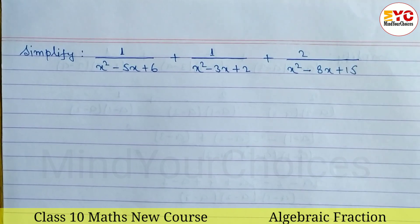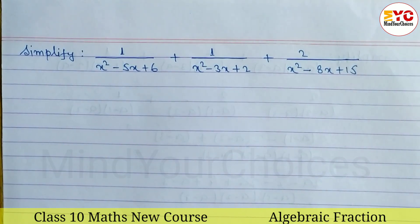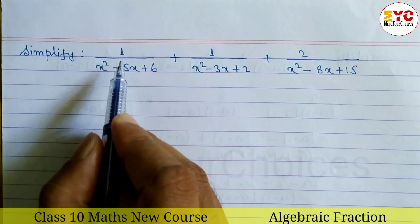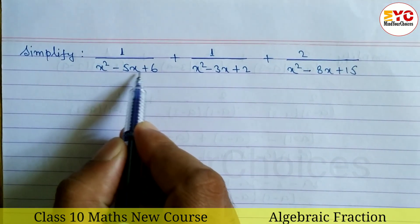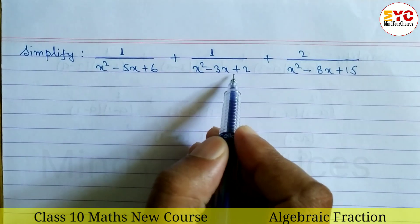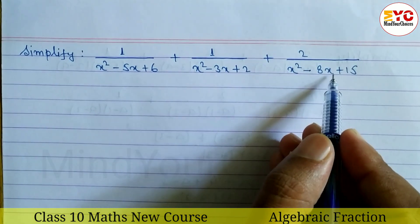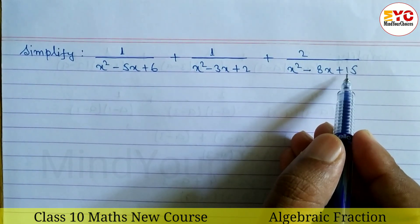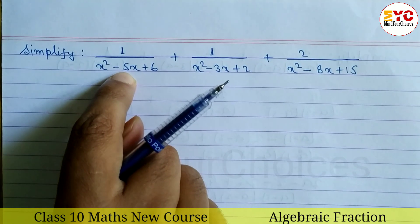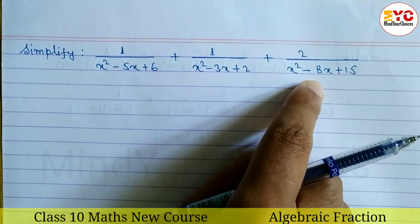Your question: Class 10 rational expression. Let's learn how to simplify rational expressions. We have: 1 divided by (x² − 5x + 6) plus 1 divided by (x² − 3x + 2) minus 2 divided by (x² − 8x + 15). First, we have to factorize each denominator.